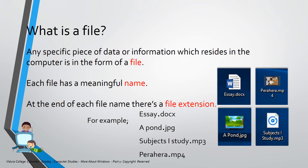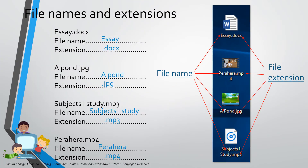Here we are going to learn file names and extensions — that means, let's see how to separate the file name and file extensions. Each file has a name and file extension. Let's see: essay.docx — it's a file. Its file name is essay. The extension is docx, separated by a dot. A pond.jpg — file name is a pond, extension is jpg.